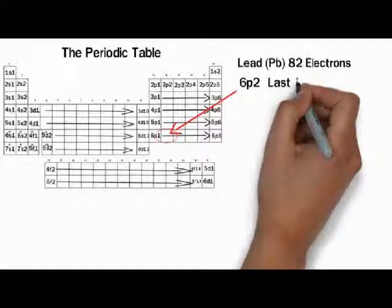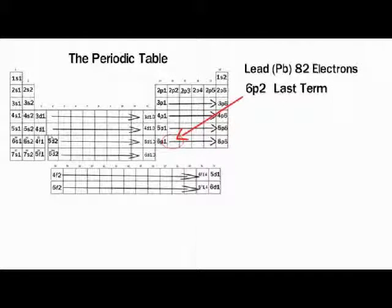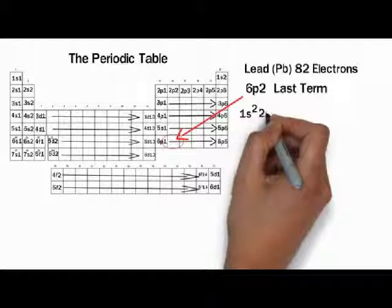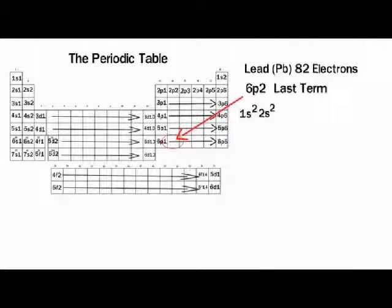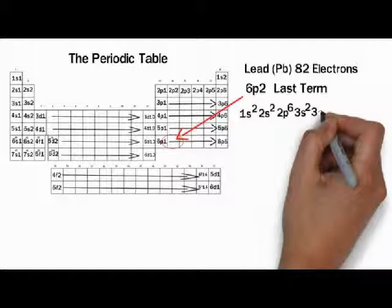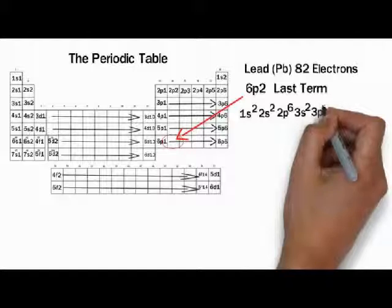Lead is located where I drew this arrow. It has 82 electrons. The last term is going to be 6p² because it's in the 6th row in the p² column—it's almost like playing battleship. Now to fill out the complete electron configuration for an element like lead, you have to write the last term of every occupied sub-level.